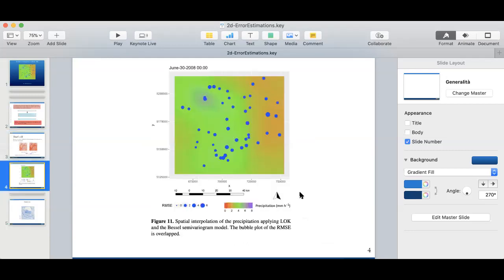This is also the same process we apply here. We apply the local ordinary kriging and the best semi-variogram models, and we have the error actually over the prediction of the rainfall.